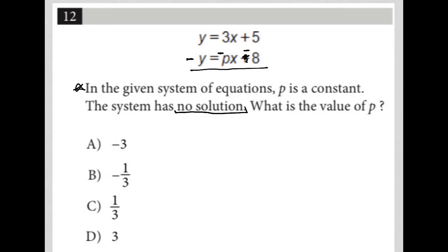When I combine my equations together, the Ys would cross out. What number would need to be here in place of the P in order for the Xs to cross out? I had a three here. If I could replace that P with a three, then I'd have three X minus three X, and then the Xs would also cross out.